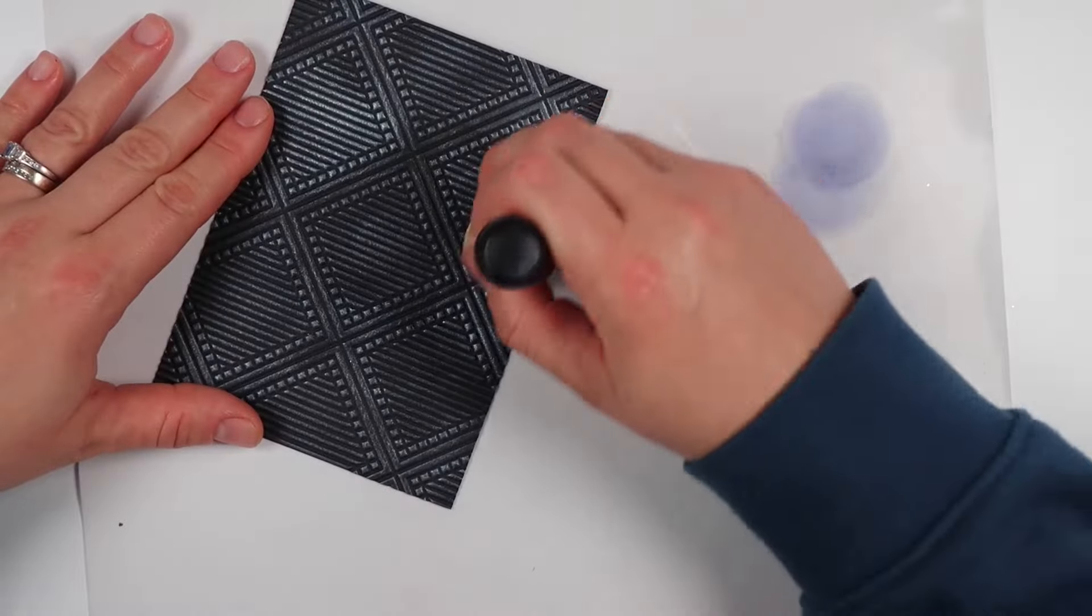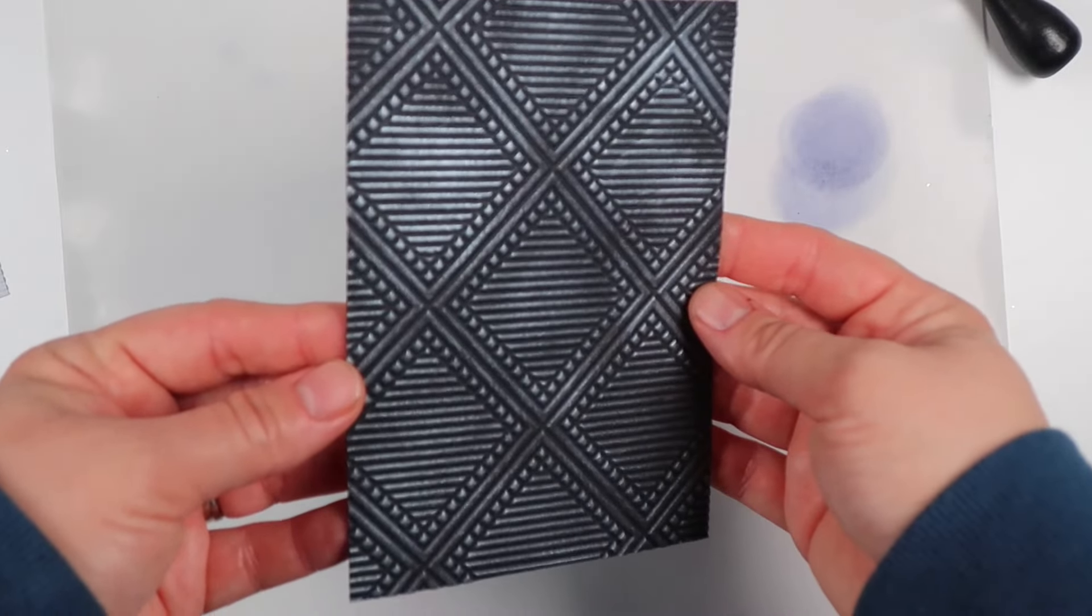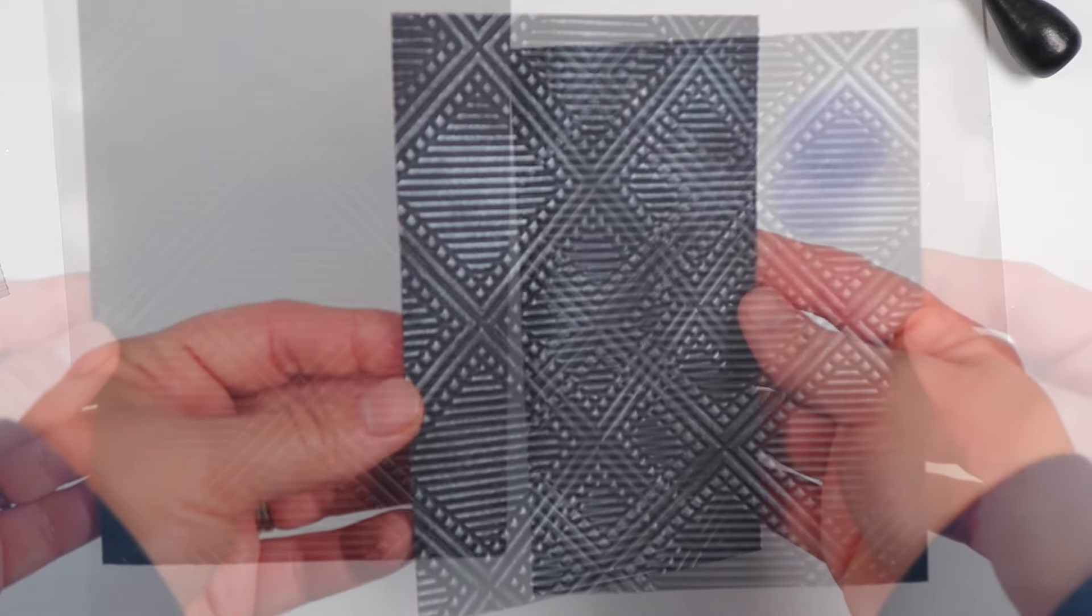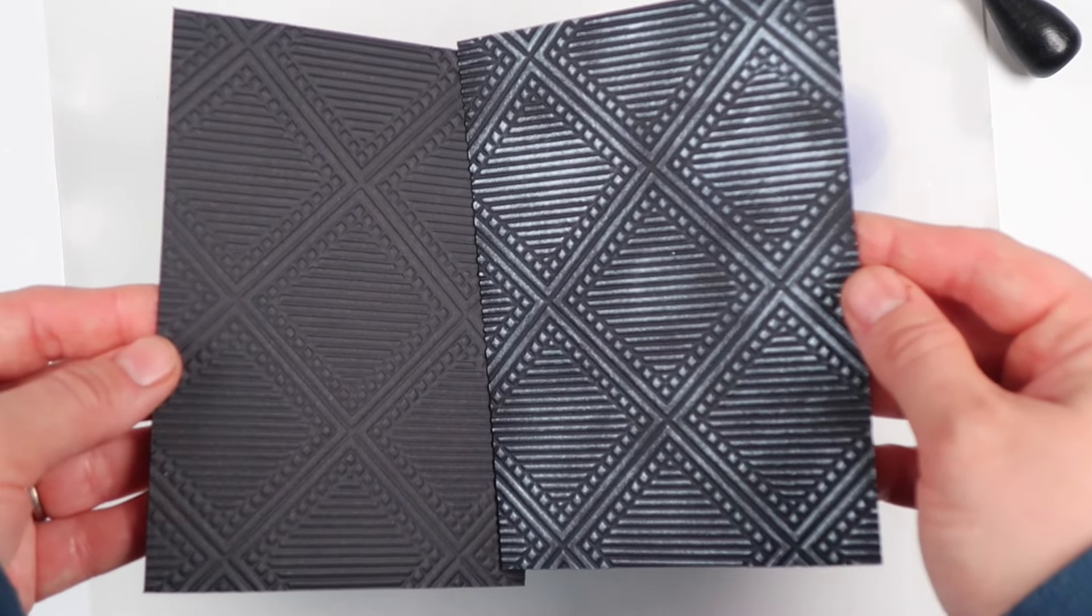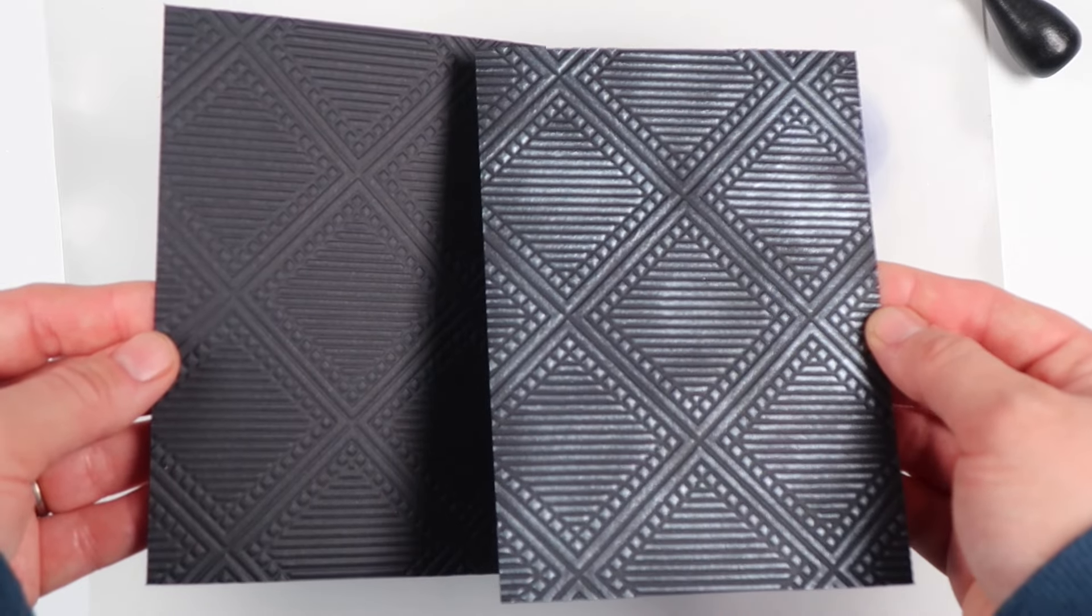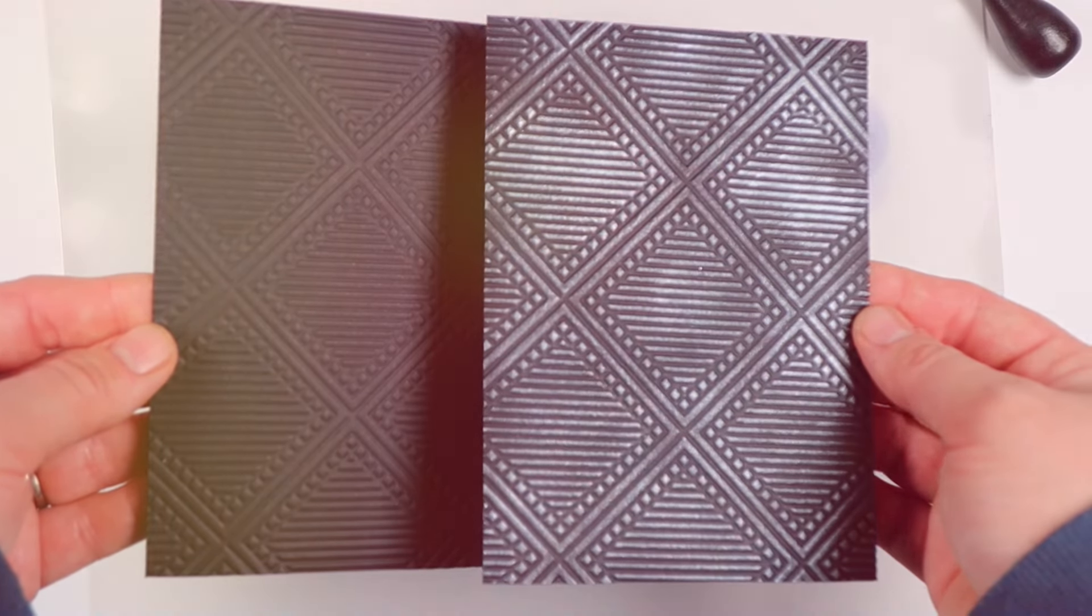You want to try and go as even as you can. If you don't, it gets a little bit blotchy, but at the same time it doesn't really matter—it gives you a really cool look either way. On the left is plain, and on the right is with some shimmer paste added to the top.